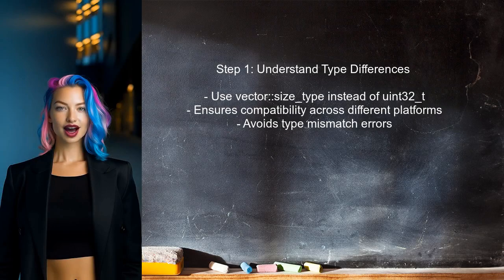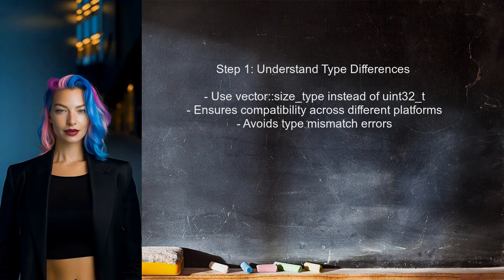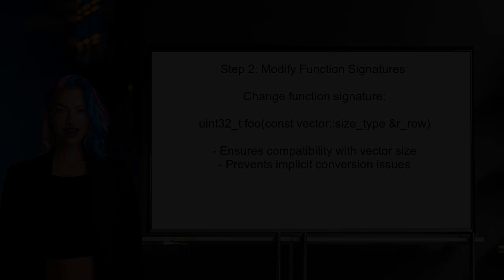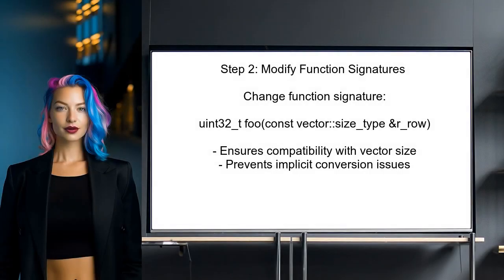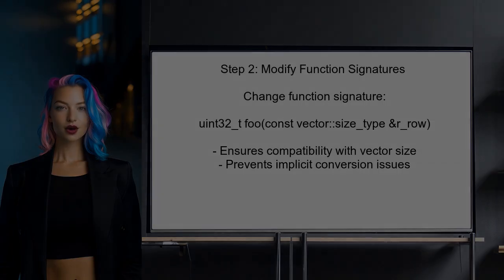To address the user's issue with type mismatches, the first step is to understand the difference between vector::size_type and the unsigned integers being used. The user should consider using vector::size_type for consistency across platforms. Next, the user should modify the function signatures to accept vector::size_type instead of uint32_t. This will help prevent implicit conversion issues and maintain type safety.